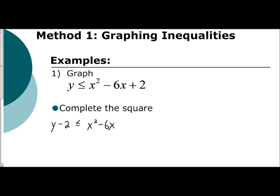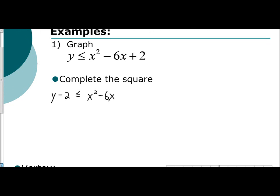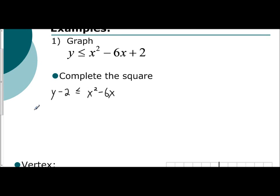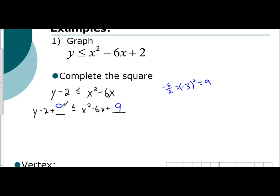Now that I have the quadratic and linear term isolated, I'm going to insert my placeholder. So I have y minus 2 plus placeholder is less than or equal to x squared minus 6x plus placeholder. I take half of b, so negative 6 divided by 2 is negative 3. I square that to get positive 9. Positive 9 goes in both positions. So I get y plus 7 is less than or equal to x minus 3 squared.